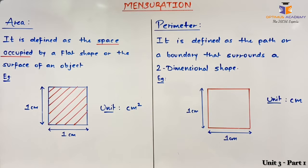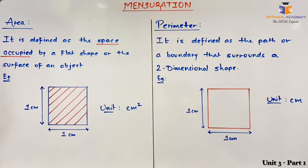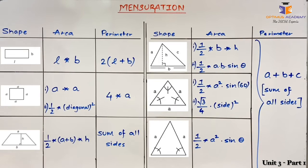In the next part of the video we are going to discuss the different formulas of 2D shapes for area and perimeter that we are going to use throughout the chapter. We will now cover the basic 2D shape formulas for area and perimeter.